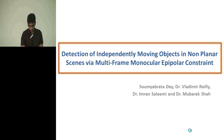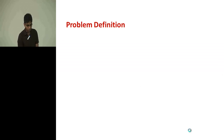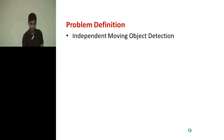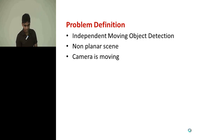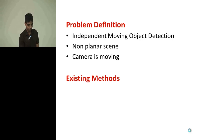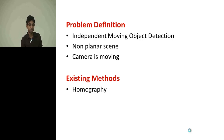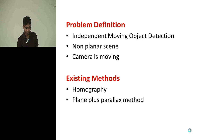The problem is detection of independent moving objects in a non-planar scene, where the scene can have large perspective variants and lots of out-of-plane objects, and the camera capturing the video is moving. There are lots of previous works done in this area, and a few works can be categorized as homography-based and plane-plus-parallax methods.